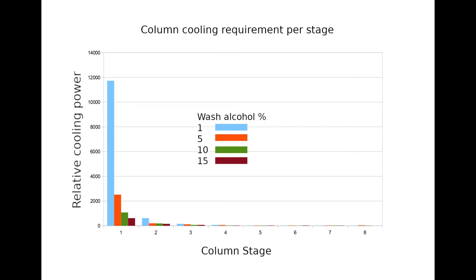As a batch distillation run progresses, the alcohol content in the boiler falls and the heating power increases. This means the cooling requirement of the column bottom rises, and the adiabatic transition zone moves higher and higher up the column, because the position of the first three stages is determined by the speed at which heat can be lost from those stages. More heat loss means more column length, so the adiabatic section where the azeotropic process occurs gets shorter and shorter until it's too short to allow enough effective stages to reach the azeotropic point.